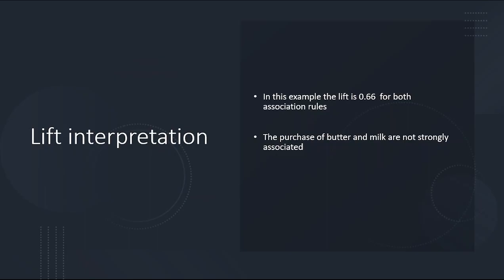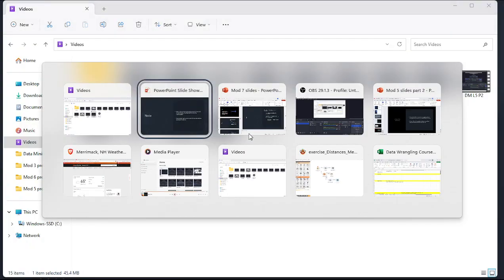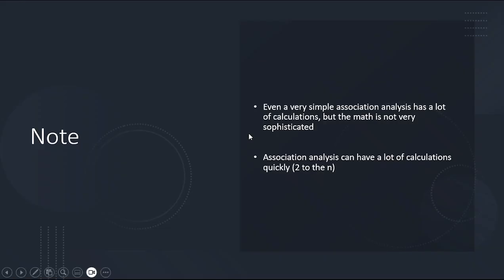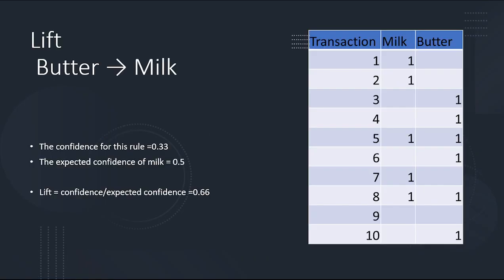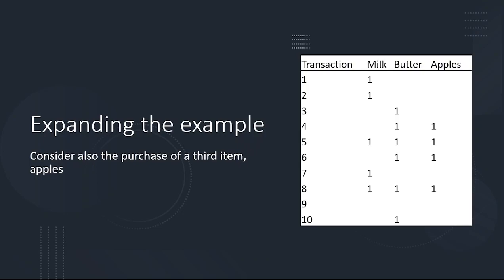The interpretation is that butter and milk are not strongly associated. For this very simple association analysis there's still quite a bit of calculation, but they're pretty easy — as long as you understand basic probability. With association analysis, once you get more than two items, you get a ton of calculations. They're not particularly hard, but with three metrics and all the different permutations of one-item and two-item item sets, it can feel overwhelming.